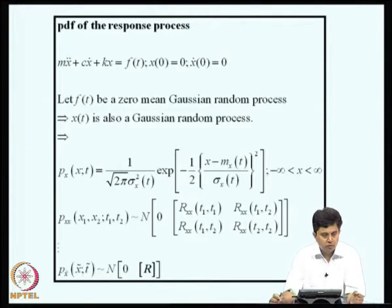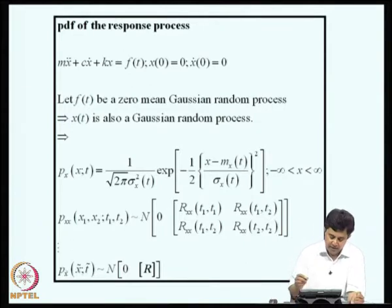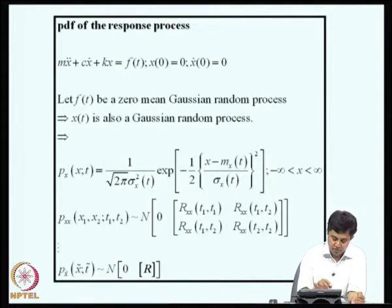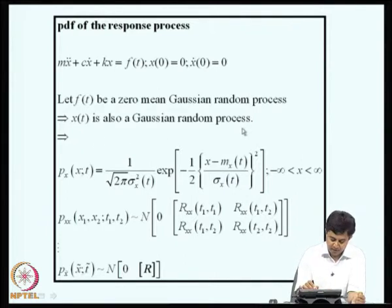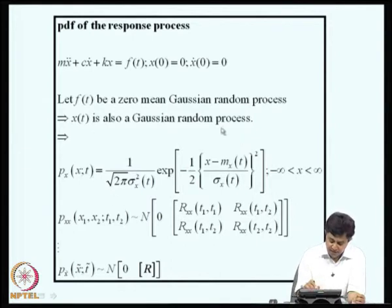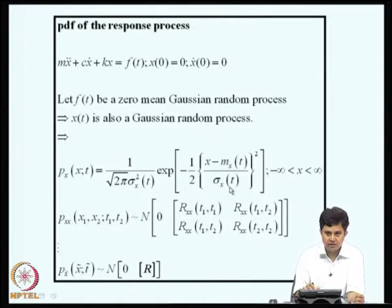We have restricted our attention to characterizing the mean, covariance, and power spectral density function of the response. If we now ask about the probability distribution function of the response, we need to specify the probability density function characteristics of the input. If we consider a single degree of freedom system excited by a random excitation f(t) and assume f(t) to be a zero mean Gaussian random process, we can show that x(t) is also a Gaussian random process. Because this transformation is linear, this statement is true.